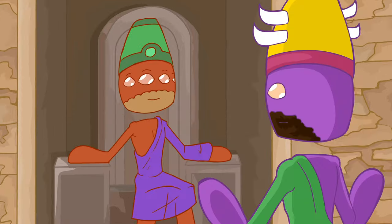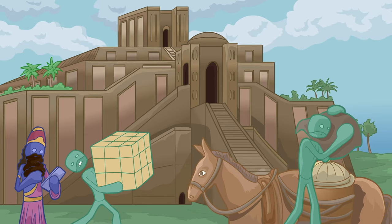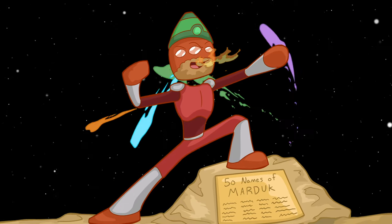Some time passes, and then he has Enki create humans because he's just got a really good feeling about it, and it turns out that humans make great slaves, so it works out. The story ends with Marduk getting 50 holy names, and everyone thinks he's just the best.